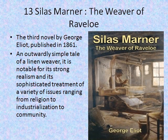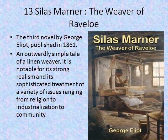The next one is Silas Marner: The Weaver of Raveloe — the third novel by George Eliot, published in 1861. It is a simple tale of a linen weaver, notable for its strong realism and sophisticated treatment of a variety of issues ranging from religion to industrialization to community.